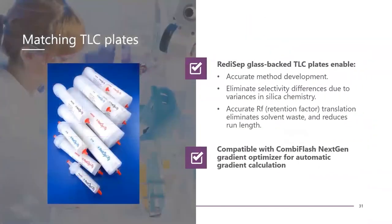Teledyne ISCO sells TLC plates with chemistry matching the column silica or alumina, mainly the pH. This causes improved matching of silica activity when creating flash chromatography methods from TLC plates when using Teledyne ISCO RediSep columns.